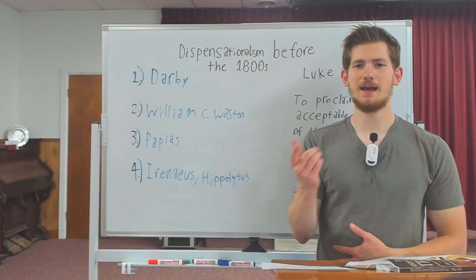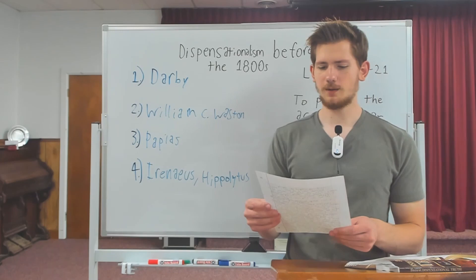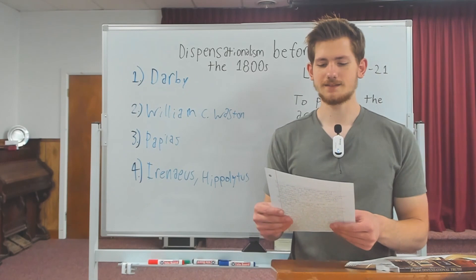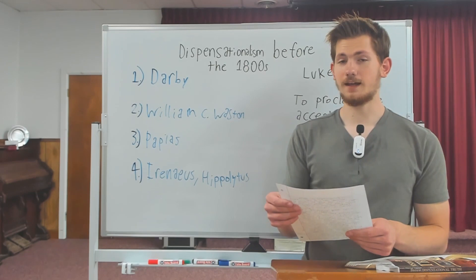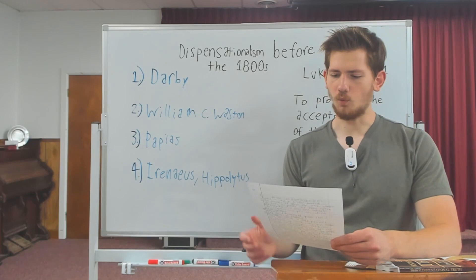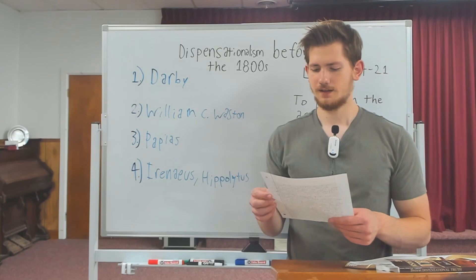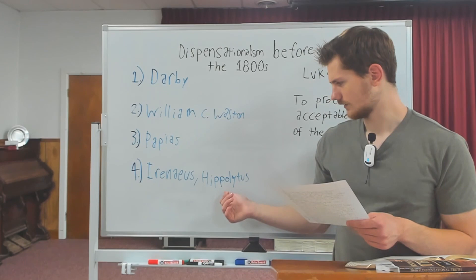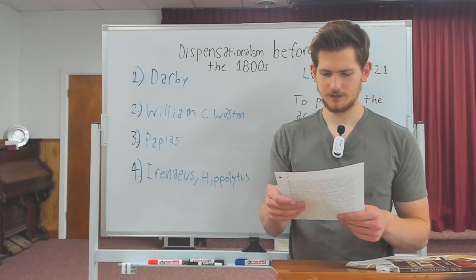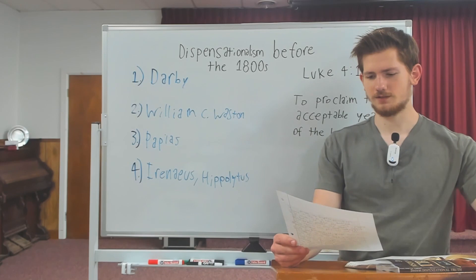A very old Christian commentary on Bible prophecy that has survived to the present day is the last 12 chapters of the famous five-volume book by Irenaeus, titled 'Against Heresies,' thought to be published between AD 186 and 188. The oldest Christian commentary on scripture that survived to the present day is a commentary on Daniel by Hippolytus, believed to have been written between AD 202 and 211.